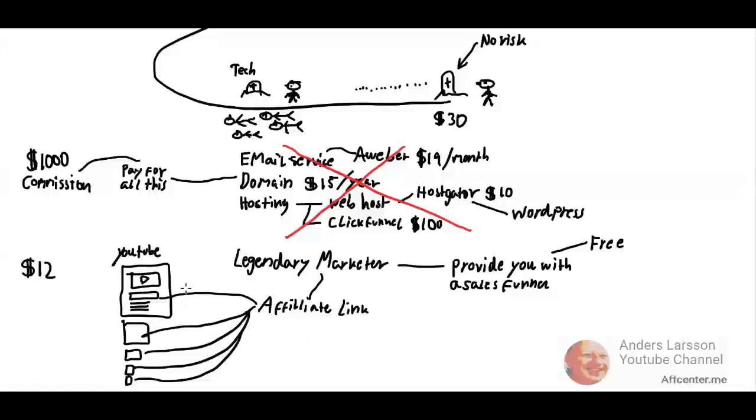Anyway, Legendary Marketer pays you a commission, so you earn $12 from that member every month. As soon as you get that commission, you can decide, you know what, I know what I'm doing. Now I'm ready to set up these services. And I know it's going to be important to plan this. This will also help me dramatically scale up my business and help me build my own brand.